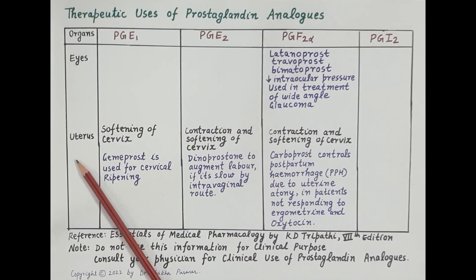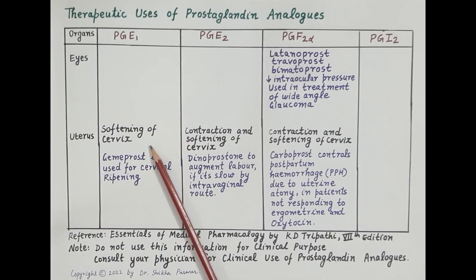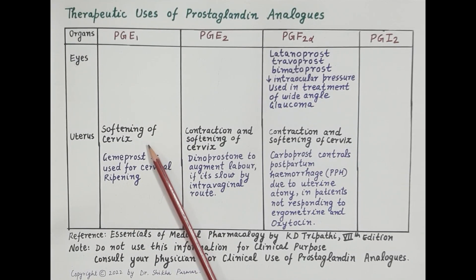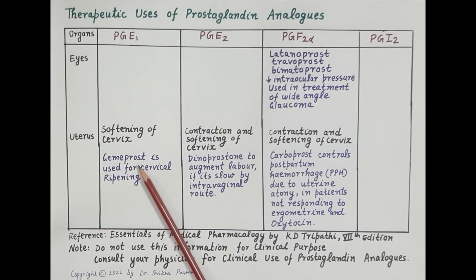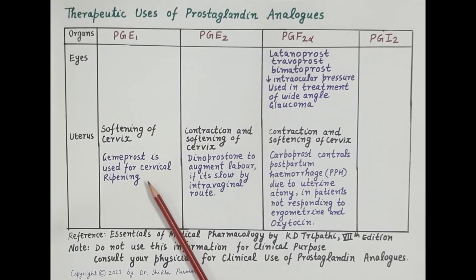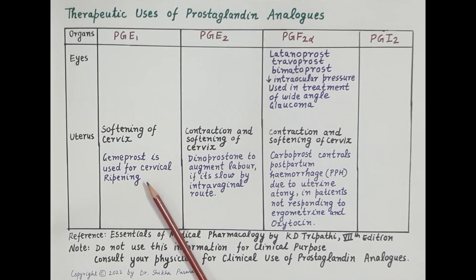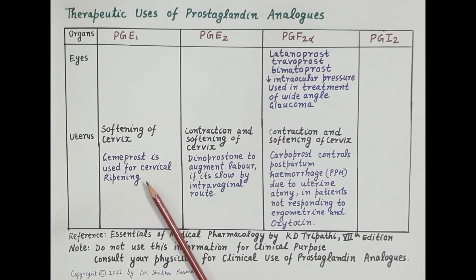Now let's look at the effect of prostaglandins on the uterus and the use of prostaglandin analogs in obstetrics. Prostaglandin E1 causes softening of the cervix — the mouth of the uterus. Gemiprost is a prostaglandin E1 analog used for cervical ripening, making the cervix soft and manageable, and is used for pre-operative softening of the cervix before any type of operation.